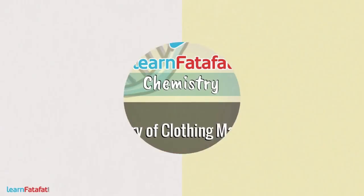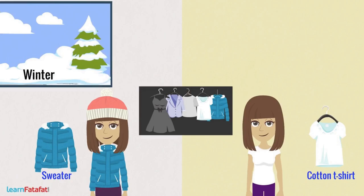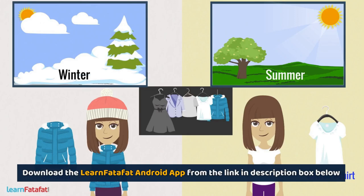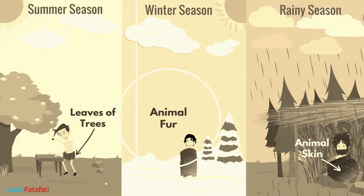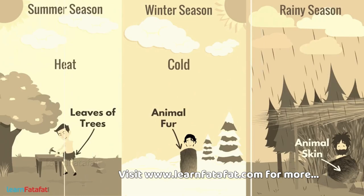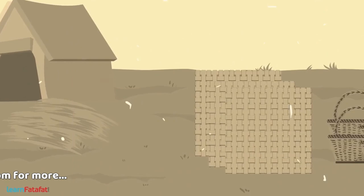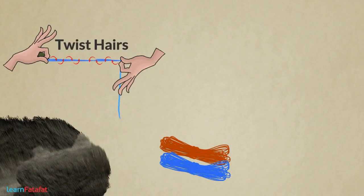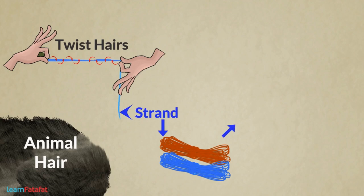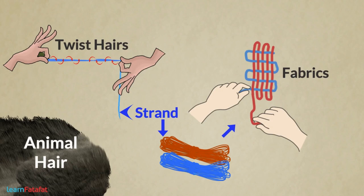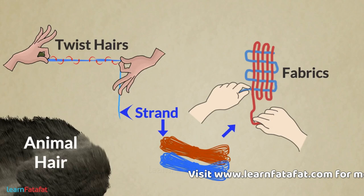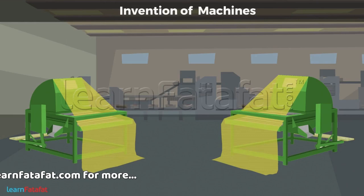Today we have a variety of clothes and wear different clothes in different seasons. Our ancestors did not have all of these. In ancient times, people used big leaves of trees, animal skin or animal furs to cover themselves and for protection from heat, cold and rain. When they started farming, they learned to weave twigs and grass to form mats and baskets, and to twist hairs from animal bodies to form long strands. These strands were woven to form fabrics. People made similar strings from cotton and flax and made fabrics from them. Invention of machines increased the speed of making fine quality fabric.